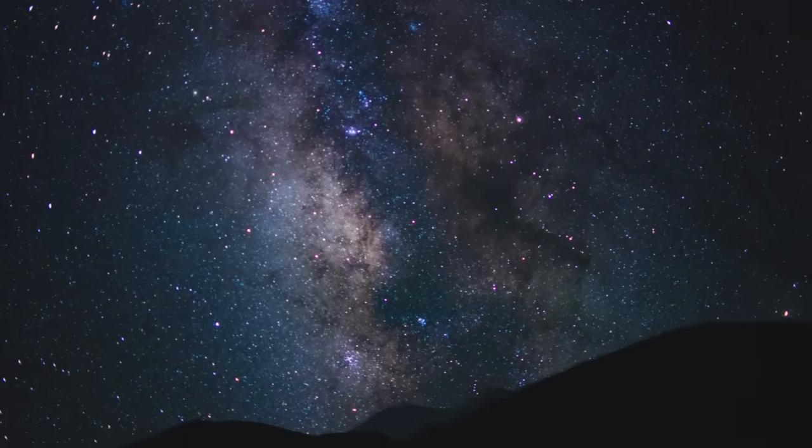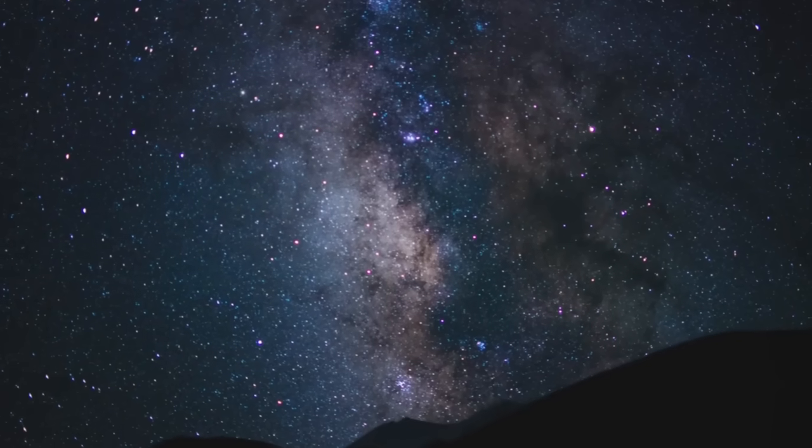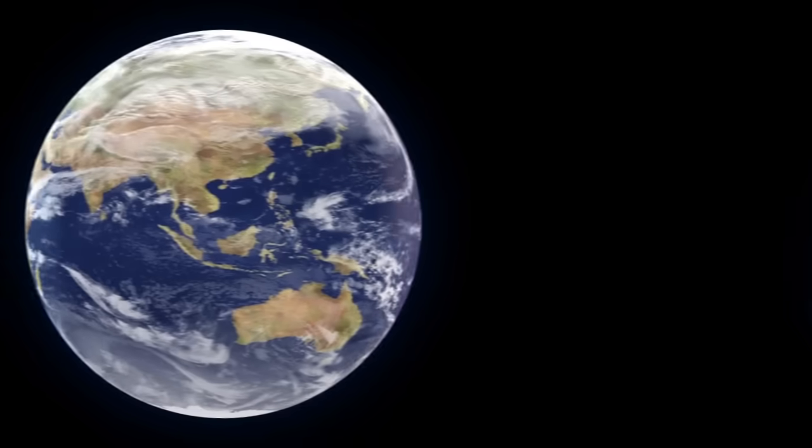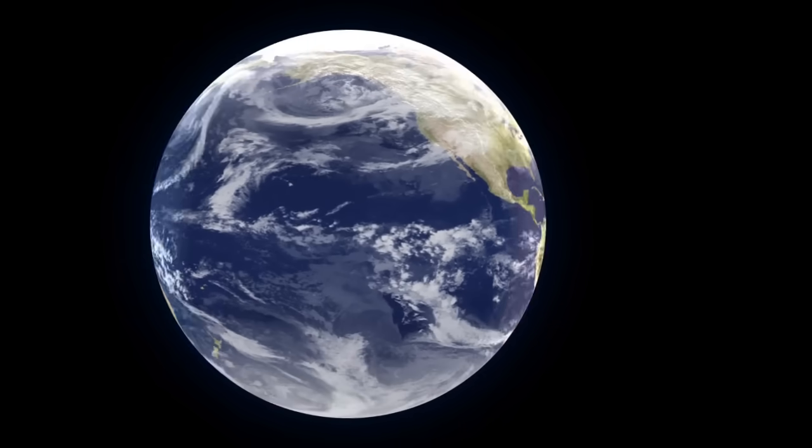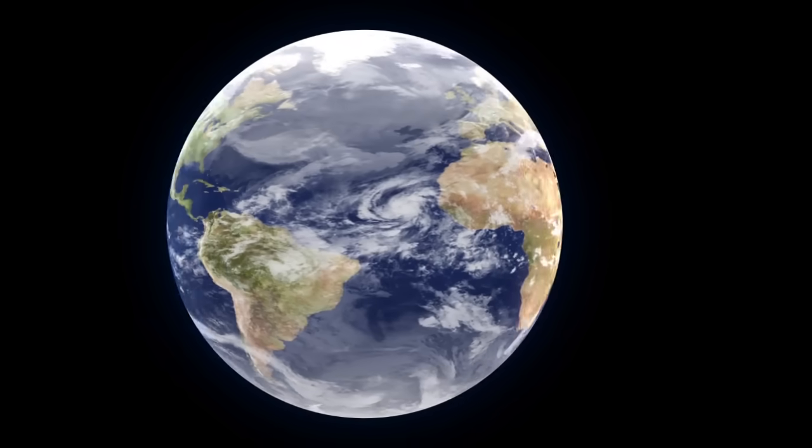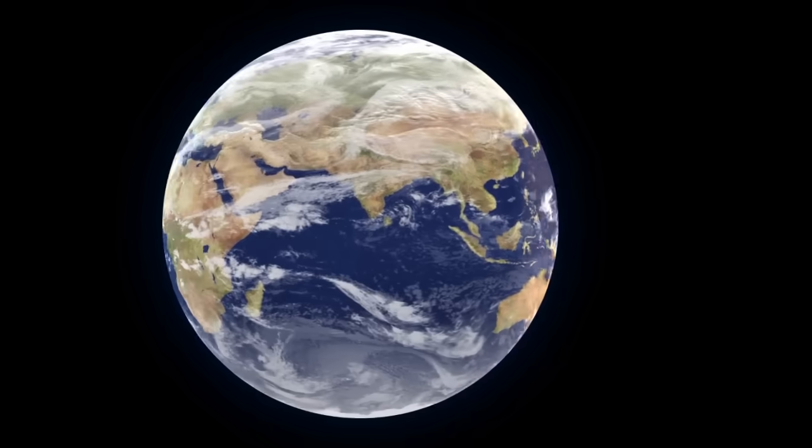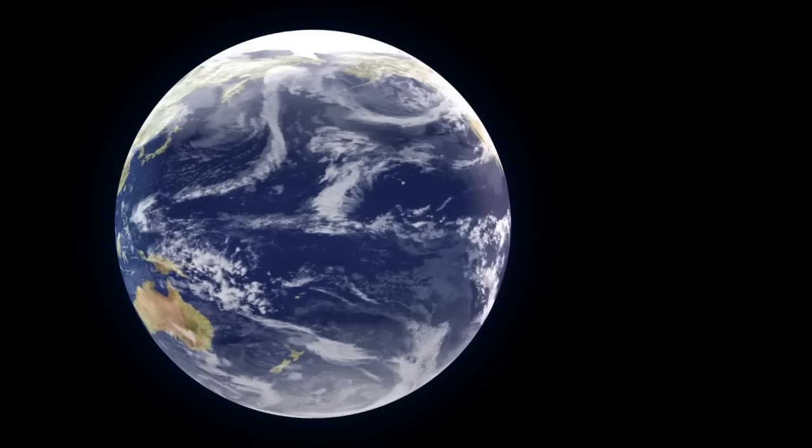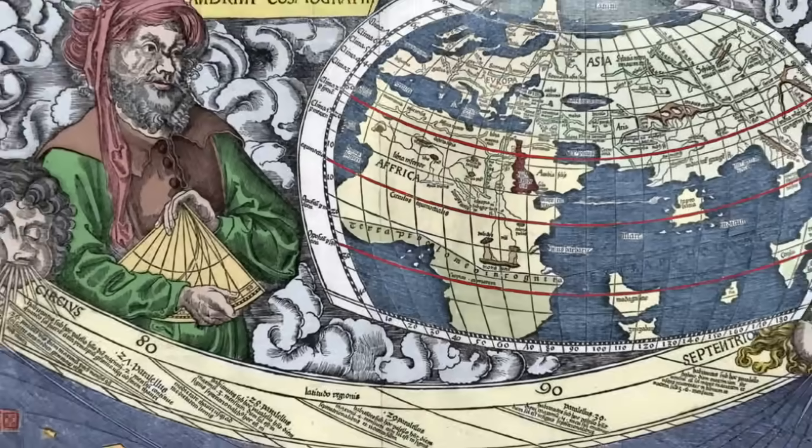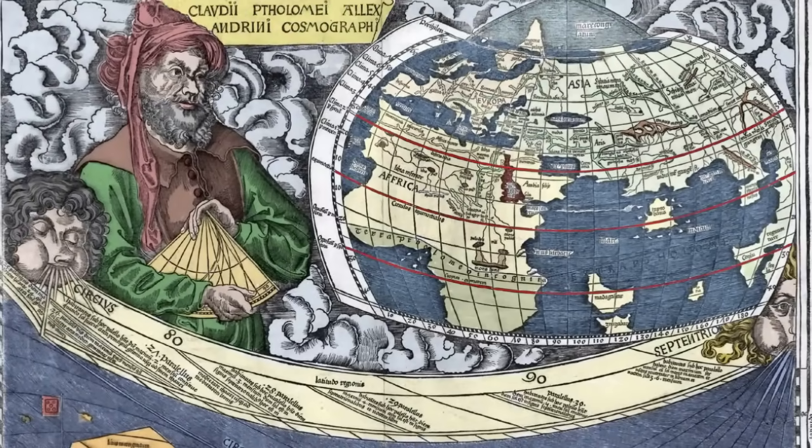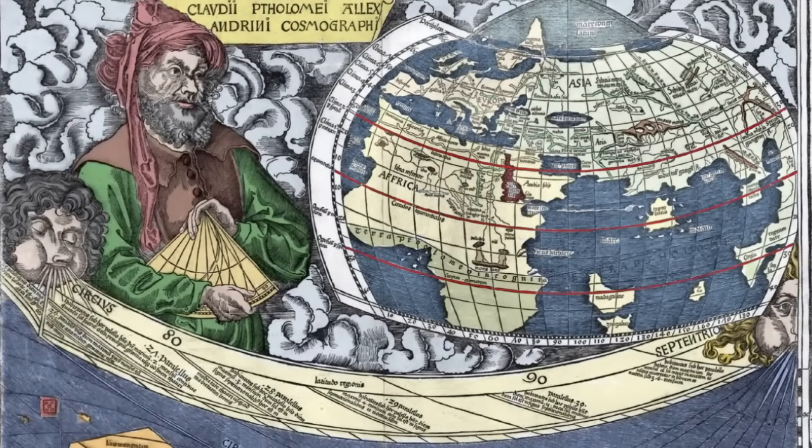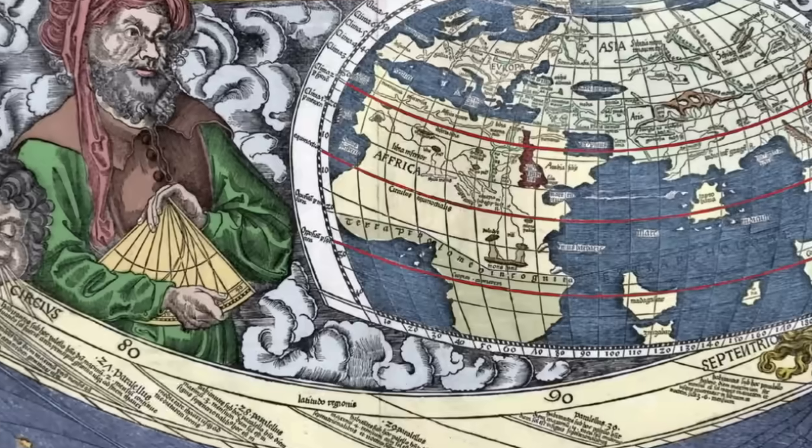Using this model, Ptolemy created tables and calculations that mapped the positions of planets with remarkable accuracy. He brought structure to the cosmos, at least on paper. Yes, his model was ultimately wrong, but it was so well constructed that for nearly 1,400 years, scientists accepted it without question.